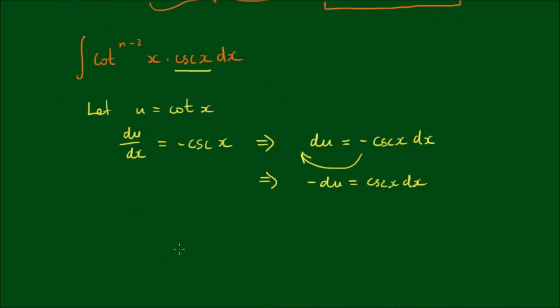Okay, so this integral becomes, after doing that, the integral of u to the n minus 2, and this entire component here is equal to negative du. Therefore, the integral has become the negative integral of u to the n minus 2 du. And of course this is now simply a power integral where we just use the power formula.